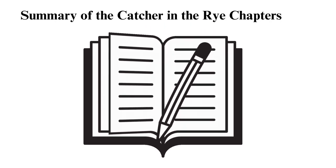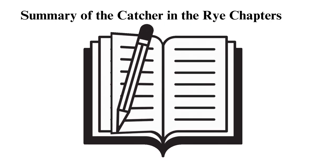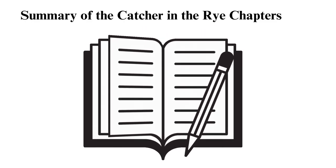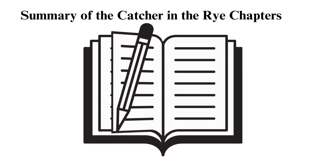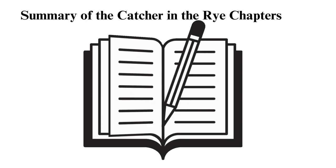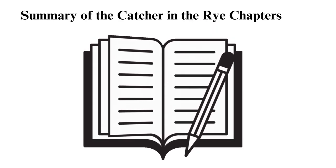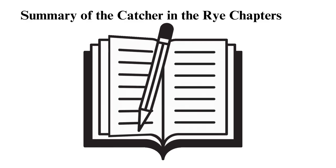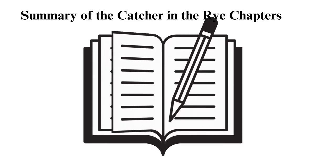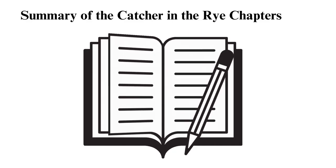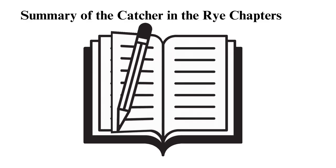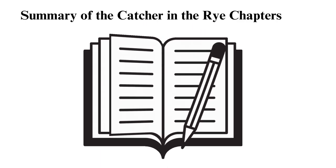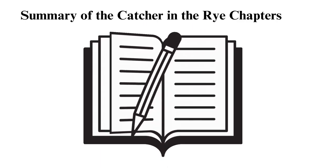The Catcher in the Rye Summary of Chapters 20-26. The events of these chapters still occur in New York. Holden meets yet another old friend, Sally Hayes, and suggests they elope together and start a new life. However, they argue due to his different perception and Sally rejects his proposal. Holden gets even more stressed, and this affects his mental health.